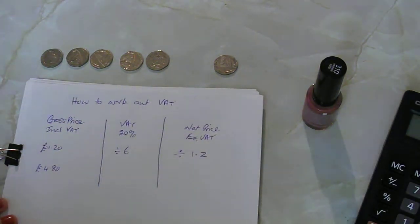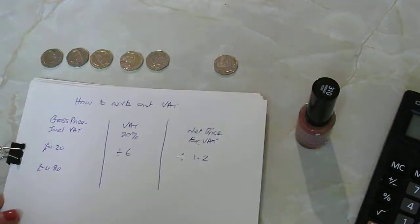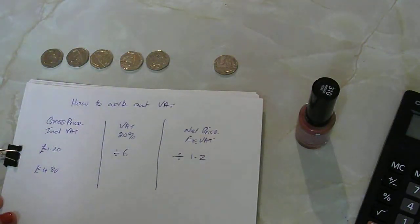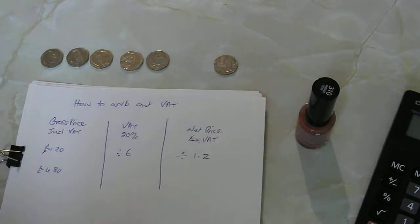So the gross price is what you would actually pay in a shop for things like nail varnish and most general goods, excluding food and books and children's clothes, things like that.